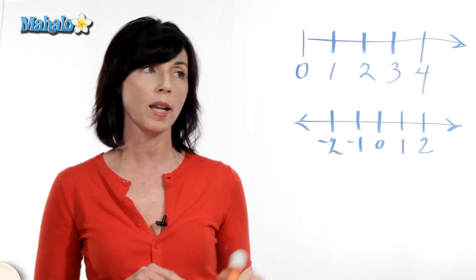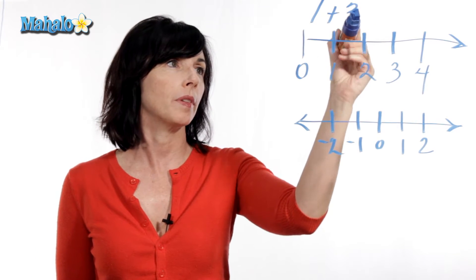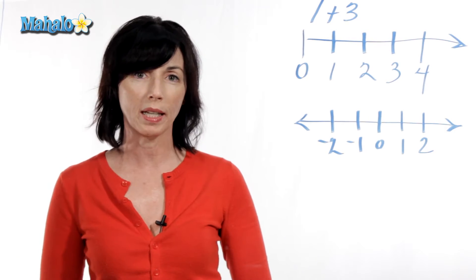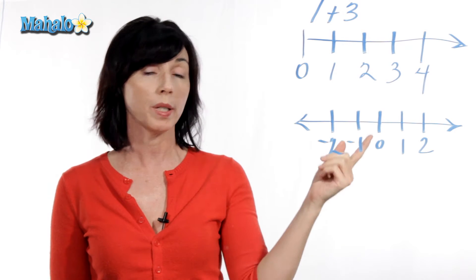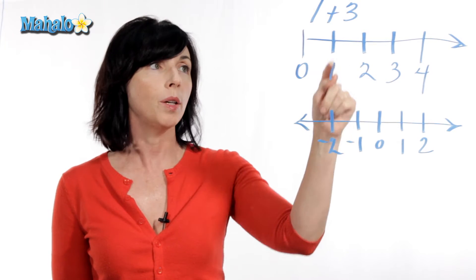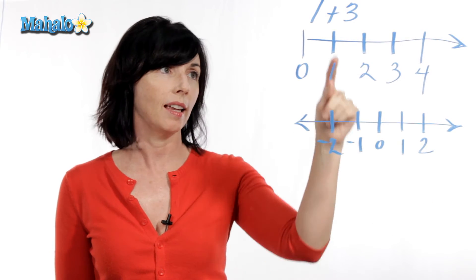So let's look at an addition equation. Let's say we have one plus three. Now we can use a number line to understand really what one plus three means. One plus three means that we start at the number one on our number line. So we start right here. And then we move three units to the right because we're adding.